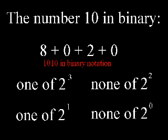The digits in a binary number tells us how many times we have a 1 and a 0. The binary number 10 can for example be written as 8 plus 0 plus 2 plus 0. That means we have 1 times 2 to the power 3, no 2 to the power 2, 1 times 2 to the power 1 and no 2 to the power 0. Therefore 1 0 1 0 in binary notation.